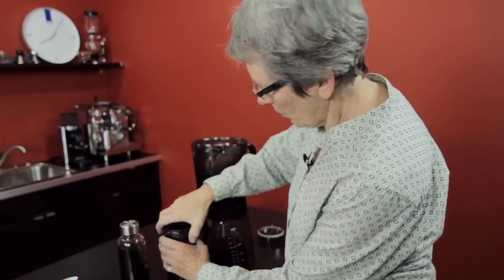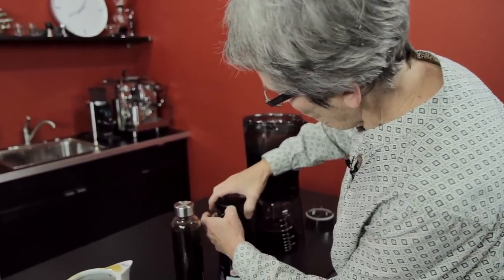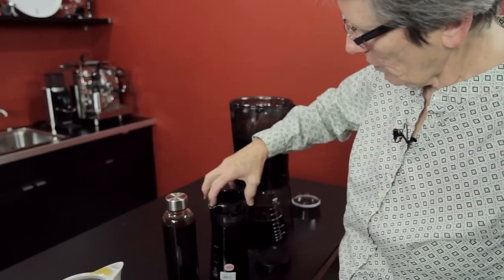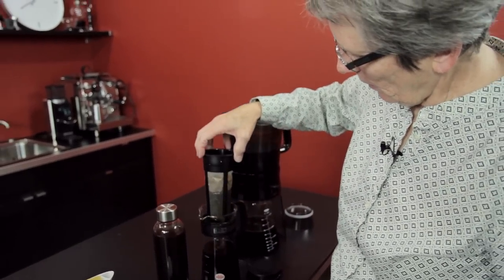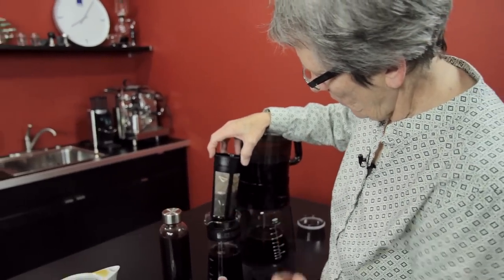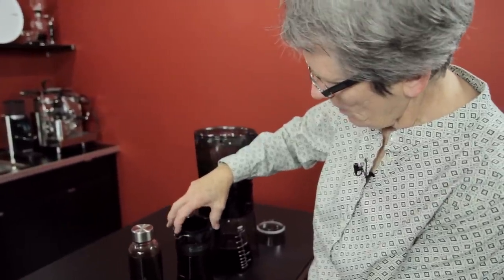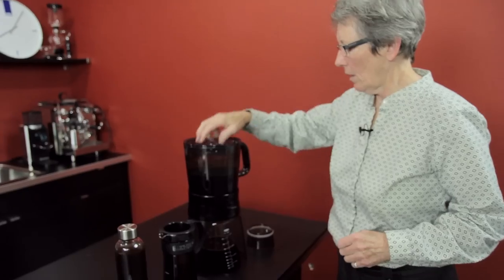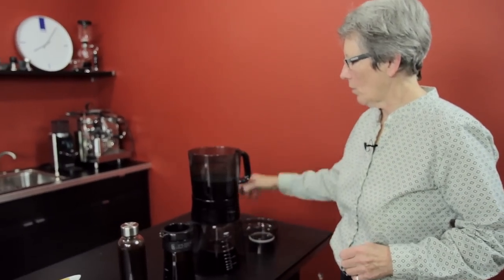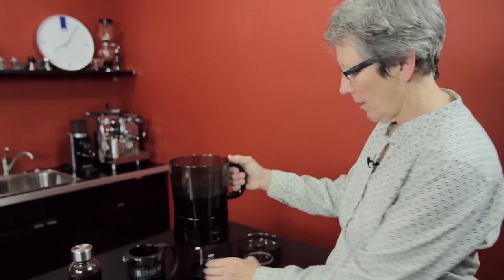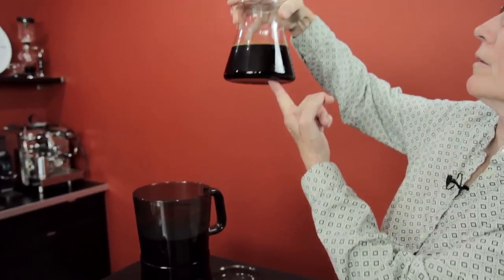This is the Hario cold brew. Again, there's a filter down inside here, and it's very fine, it's a nylon filter. Clean cup of coffee. And then the OXO has a stainless steel filter in the bottom that's fairly fine. And again, by looking at that, I would say that's a pretty clean cup of coffee as well.